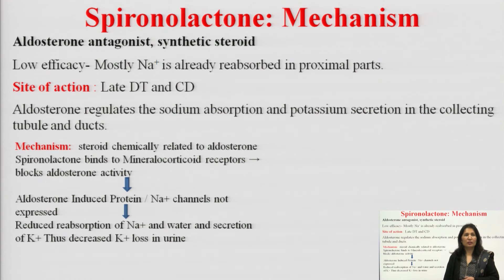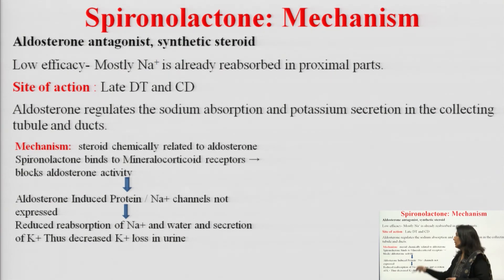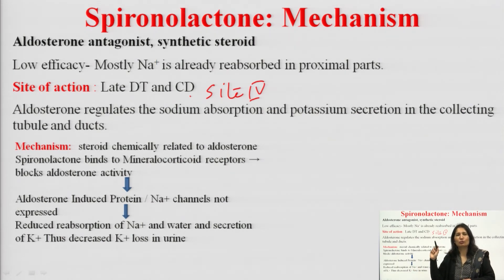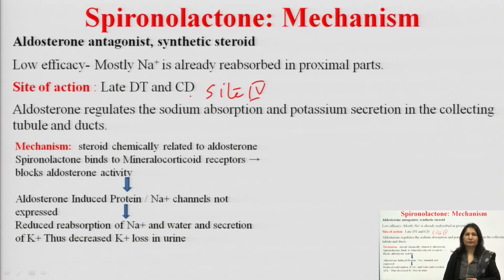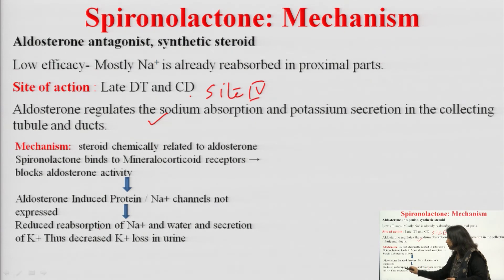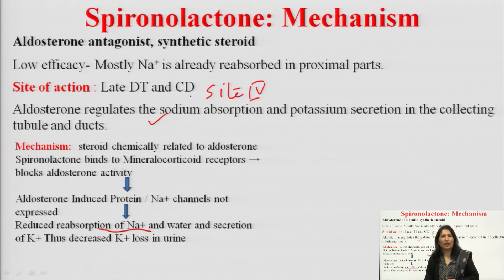Spironolactone is a low efficacious, synthetic steroid aldosterone antagonist. It is low efficacious because it acts at site 4 — the late distal tubule and collecting duct — and by the time the filtrate reaches here, most of the sodium has already been reabsorbed in the proximal segments. It reduces sodium and water reabsorption and decreases potassium secretion, thus decreasing potassium loss in urine.